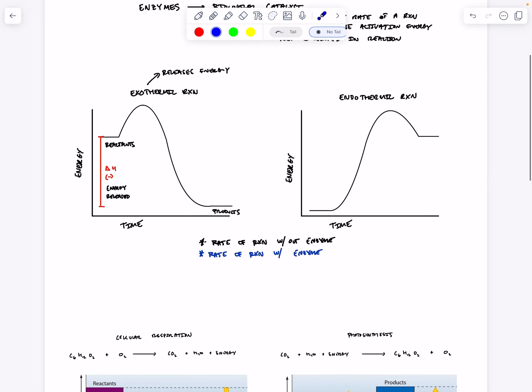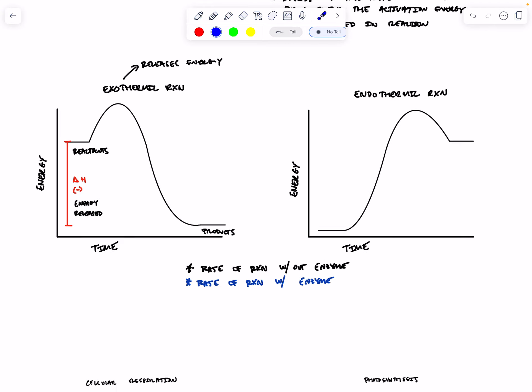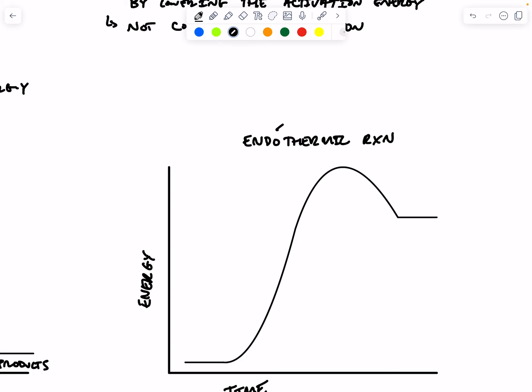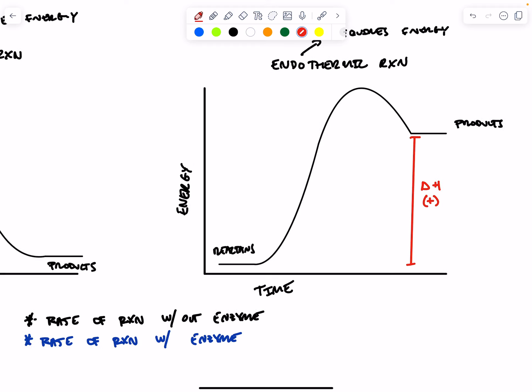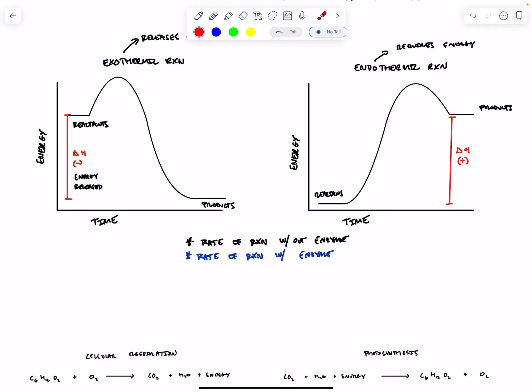An endothermic reaction requires energy in order to run. If we look at our reactants here and our products here, you can see that the products have a higher energy level than the reactants. The difference between these energy levels is also delta H, and in this case, it's positive. Here, we're going to need an input of energy in the reaction in order to have the reactants get to the level of energy as the products.